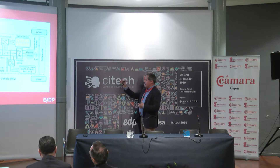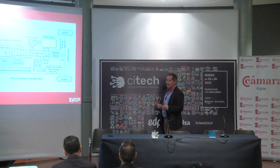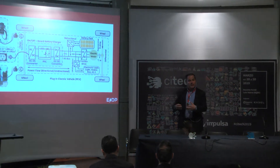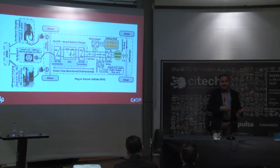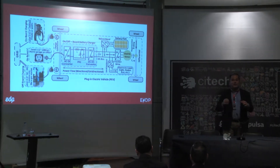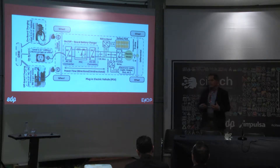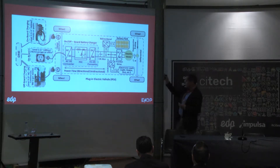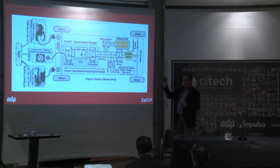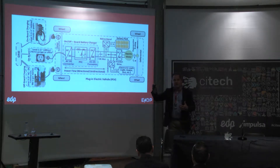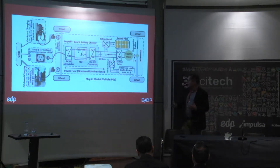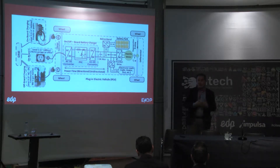Empieza a haber flujos de energía de un sitio a otro, de tal manera que el coche cuando frena aprovecha esa energía para cargar la batería. Todo esto es gracias a la evolución de la electrónica, que nos permite, mediante convertidores, rectificadores y filtros, ese juego de energía desde la corriente alterna a la corriente continua y viceversa. El coche pasa a ser un elemento realmente tecnológico e innovador.